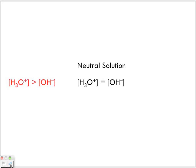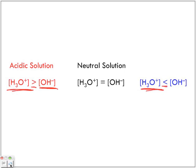Now, if the hydronium ion is greater than the concentration of the hydroxide ion, what kind of a solution do we have? We have an acidic solution. Now, if the concentration of the hydronium ion is less than the concentration of the hydroxide ion, we have a basic solution.